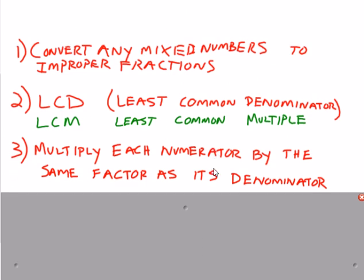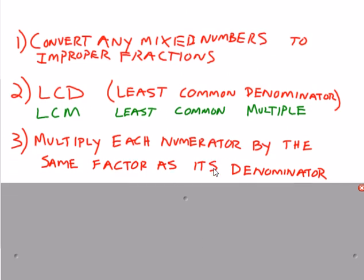Next, if your denominator changed due to step two, you have to change the numerator accordingly. So we're going to multiply the numerator by the exact same number that you multiplied the denominator.